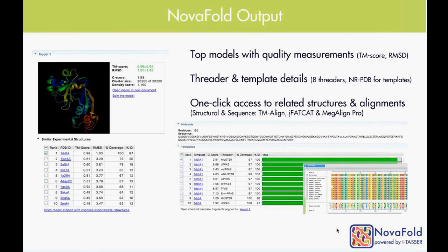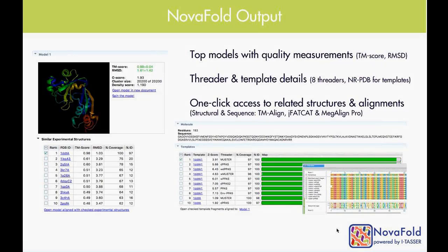Part of our focus on efficiency is the output file. For each application, we generate a user-friendly output file that helps researchers get a head start on their analysis. We provide information such as what templates were used during the modeling process, access to sequence alignments of the templates, and one-click access to structural alignments if you're interested in aligning your protein model to any related protein or template that was used.